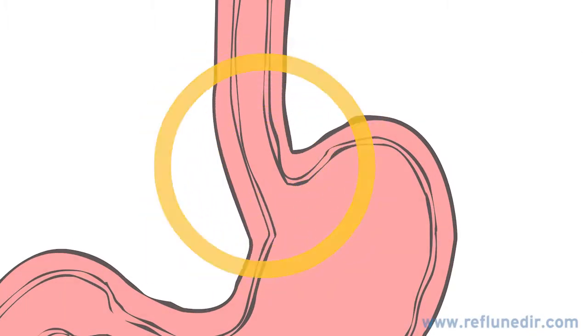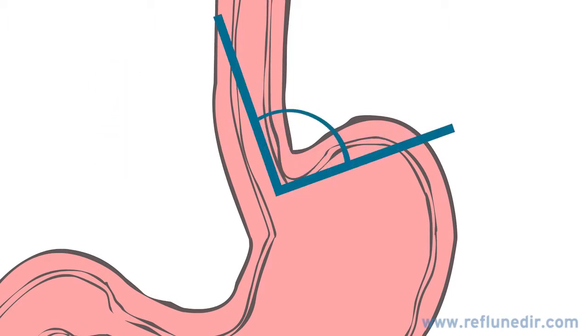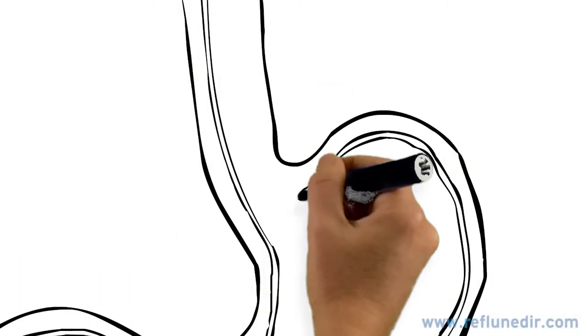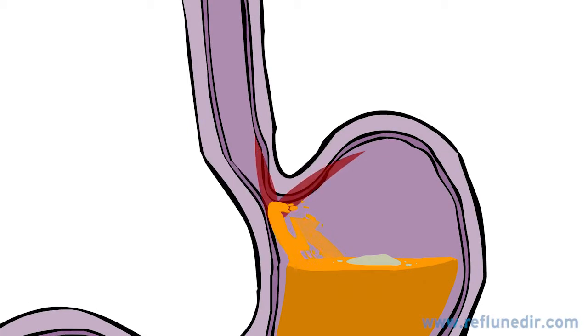The reason reflux does not happen in healthy people is a valve mechanism which operates here. This mechanism is made up of two parts. The first is the angle here which is called the angle of His. When we eat, the pressure inside the stomach builds up and this angle is pushed onto itself making a check valve action like this.